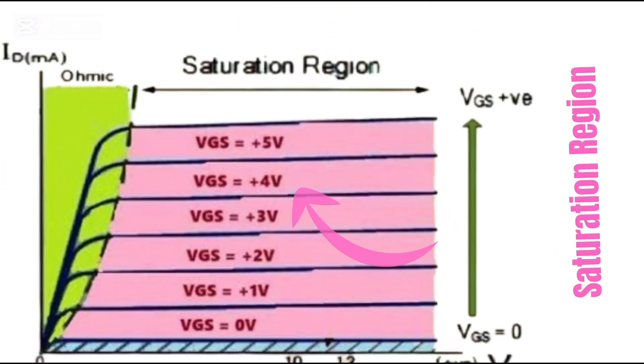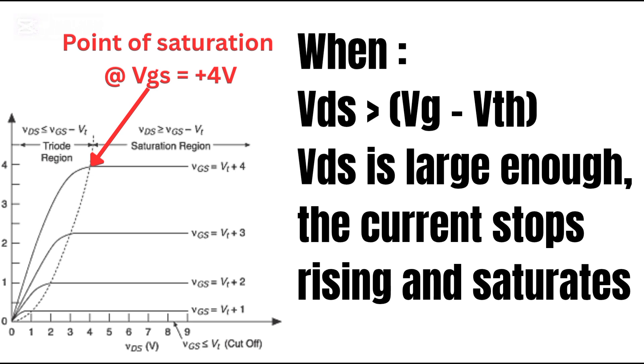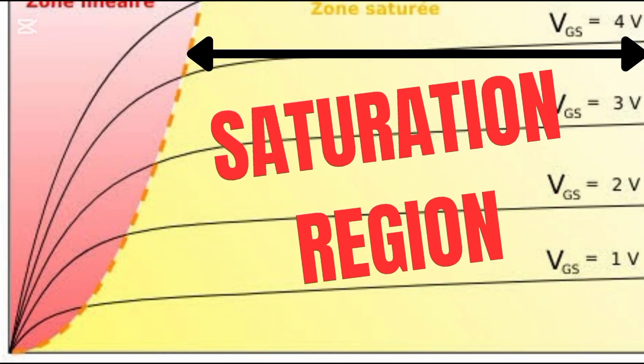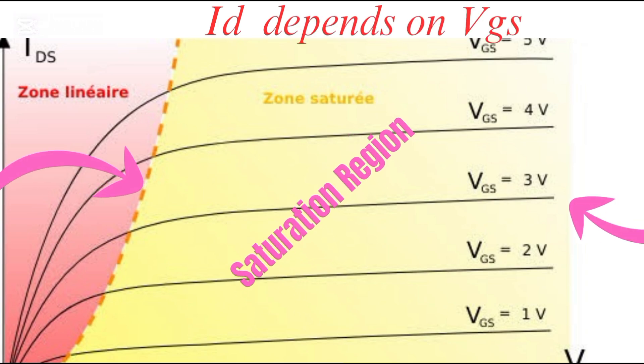Three, saturation region. When VDS is large enough, greater than VGS minus VTH, the current stops rising and saturates. ID depends mostly on the gate voltage at this point.